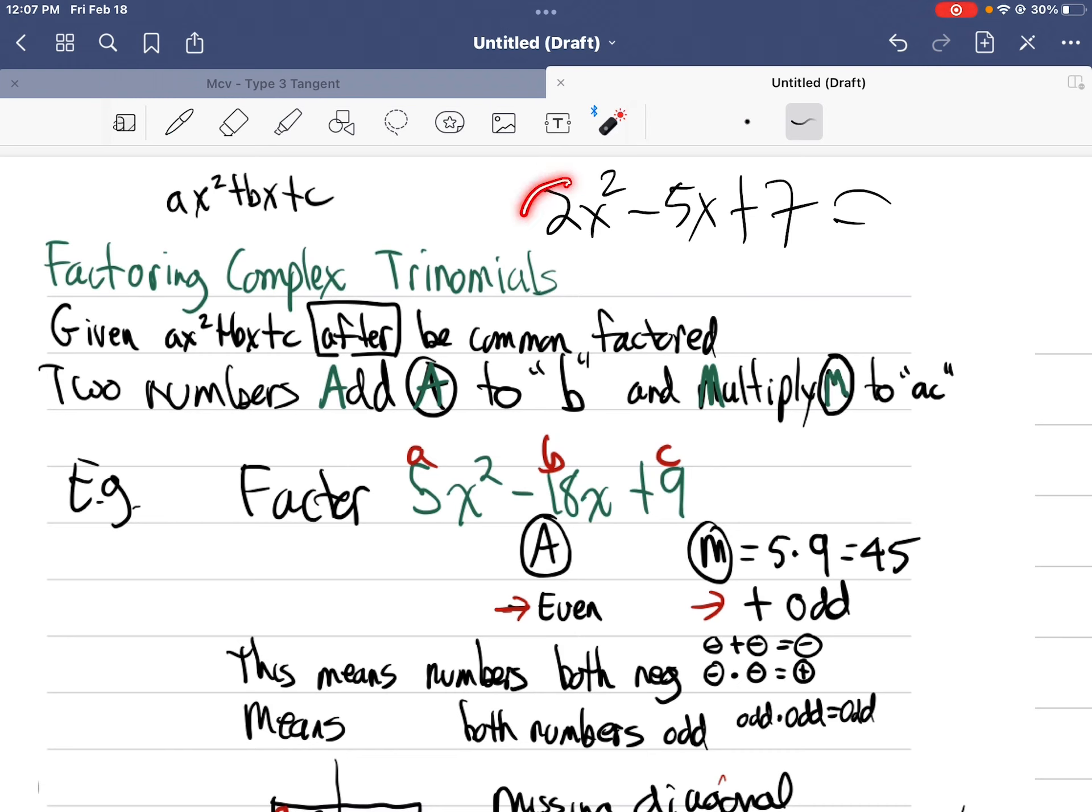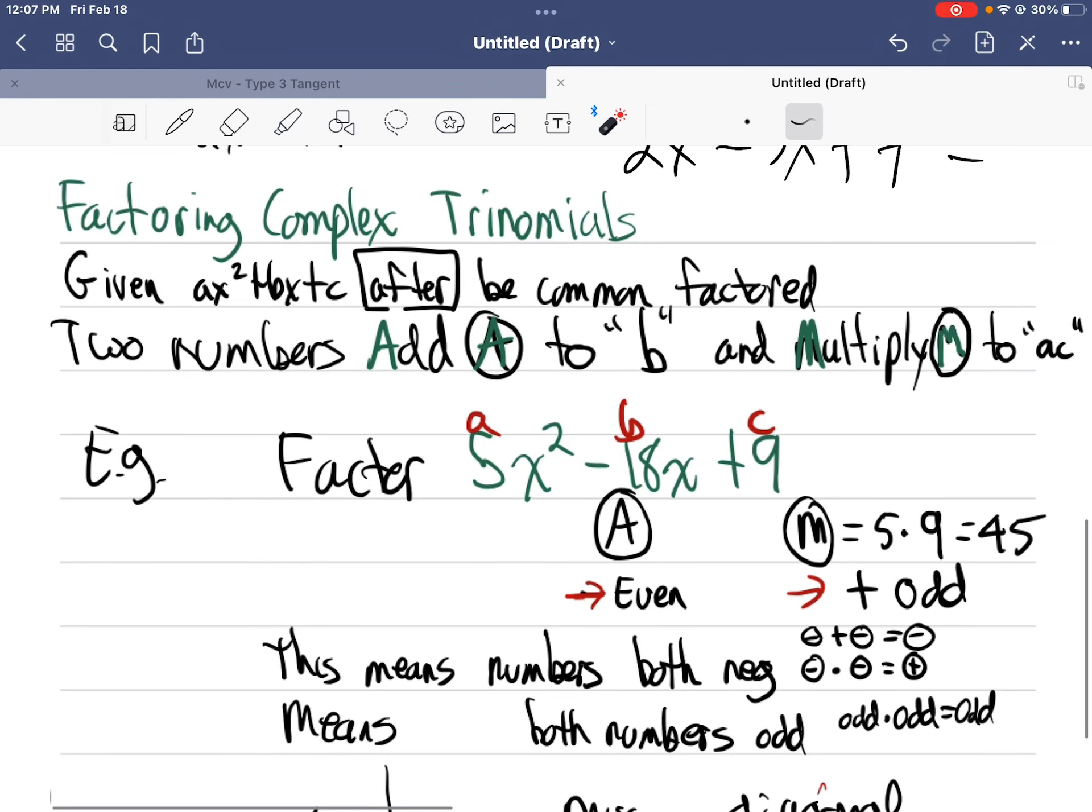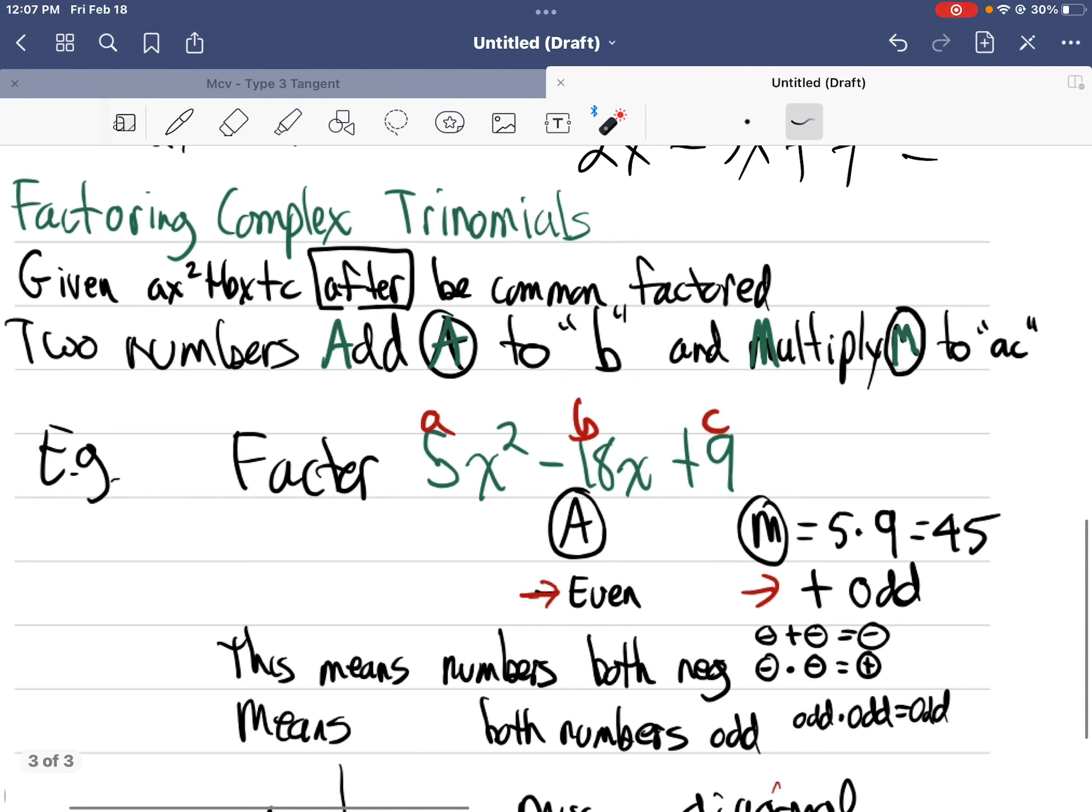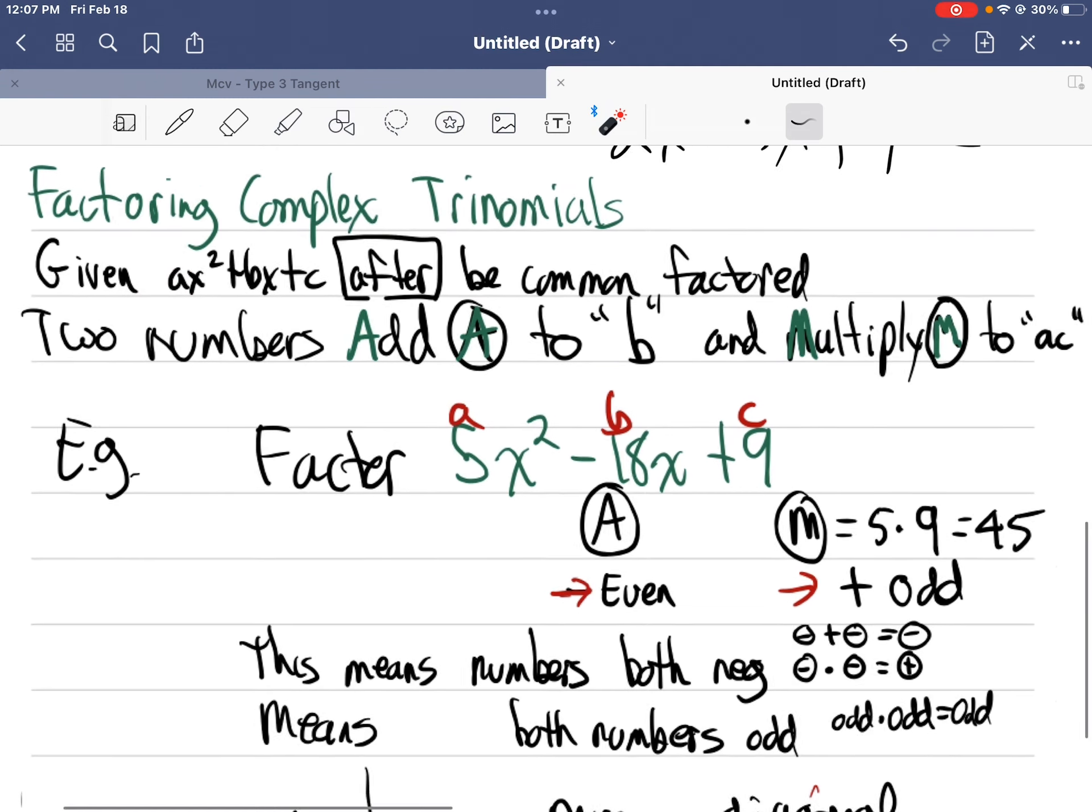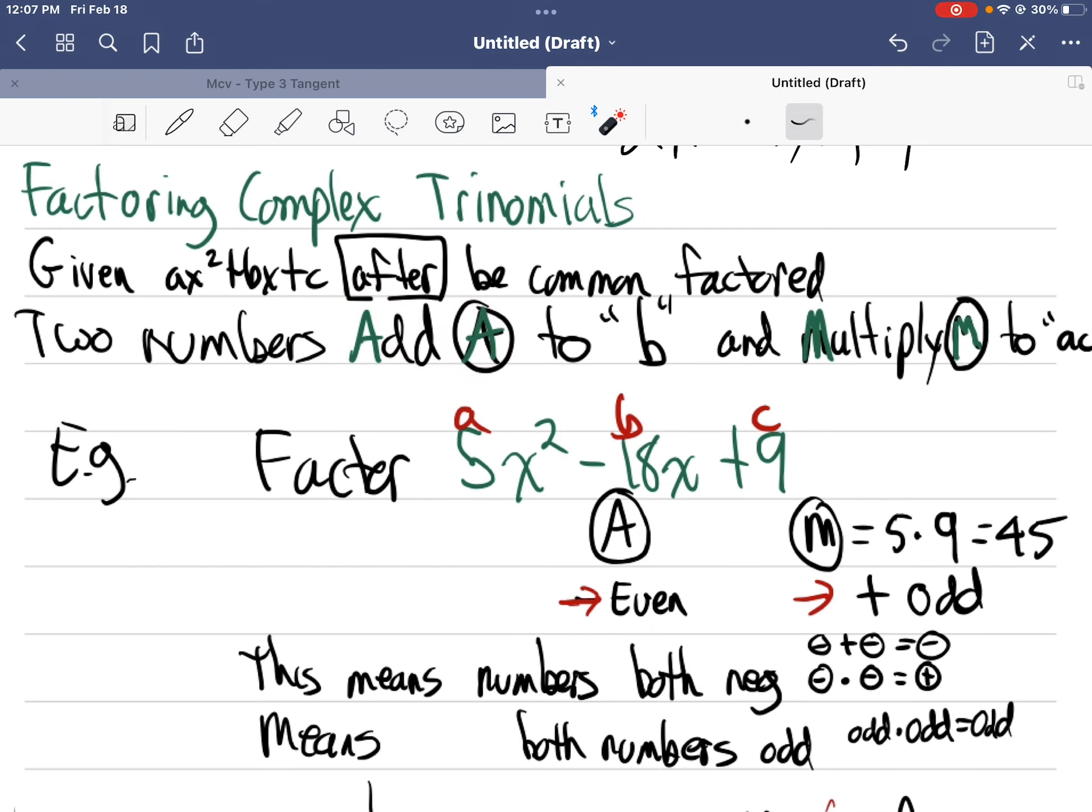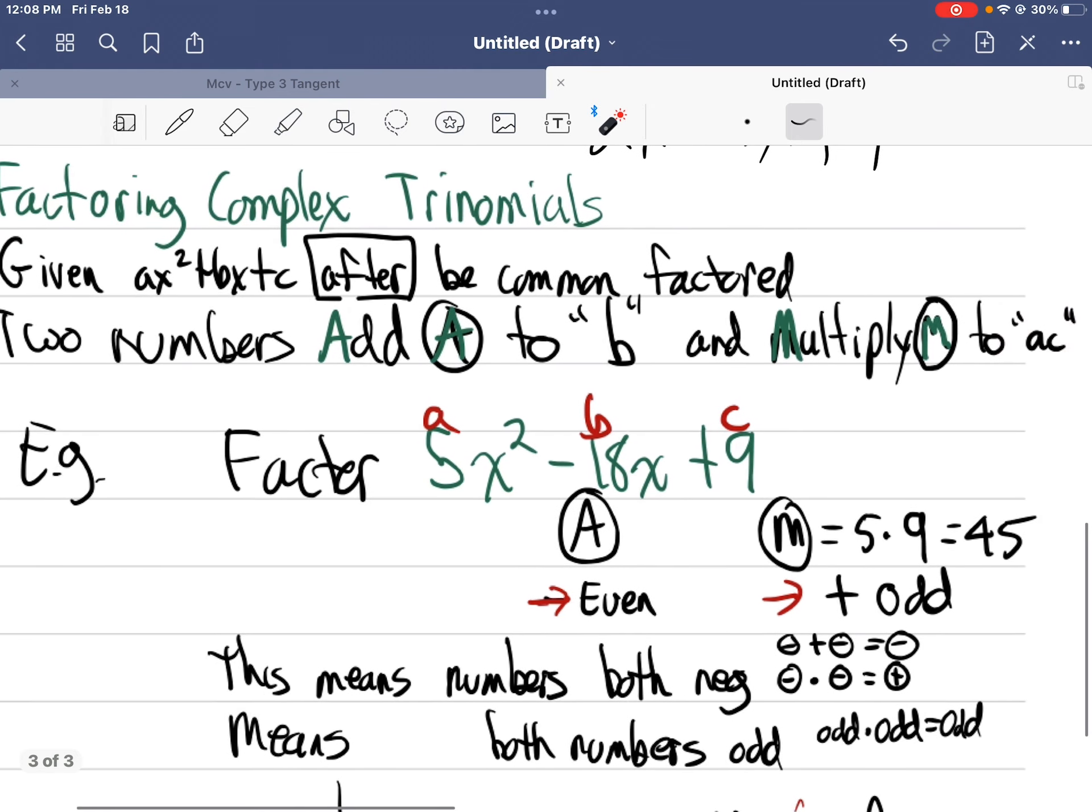The whole point here is that this number, even after you've common factored, is not 1. That's the idea. So I've put the summary here of what defines it. We know that if I've got ax squared plus bx plus c, after common factoring, in other words a is not 1, I need to find two numbers that add big letter A in a circle to b. So add to this number here in the middle b, and they have to multiply big M to a times c. I'm not going to go into why that works. That's just the facts.